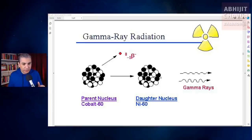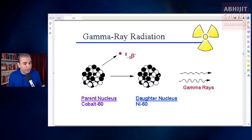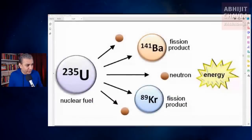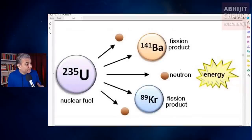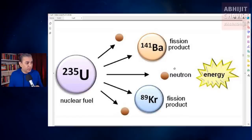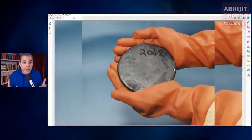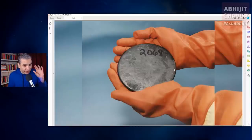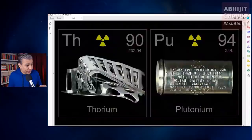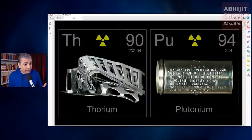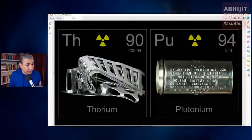In spontaneous fission, an atom actually splits into two or more nuclei instead of throwing off an alpha or beta particle. Atoms of heavy, unstable elements such as uranium undergo spontaneous fission. Uranium is naturally radioactive and constantly undergoes spontaneous fission at a very slow rate. Other elements such as thorium and plutonium are also naturally radioactive.